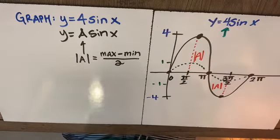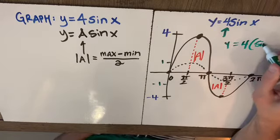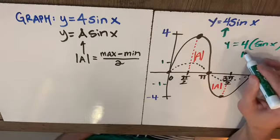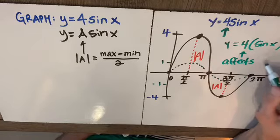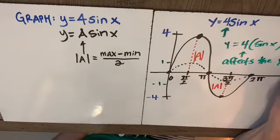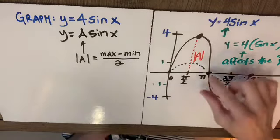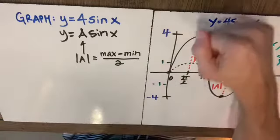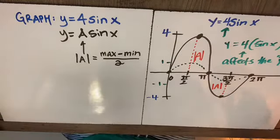When I say that you could look at it as y is equal to 4 times our parent function and anything outside affects the y values. So if you're outside you're away from the x, you're going to affect the y values. So where we had a y value of 1 we're going to do a vertical stretch and have a y value now of 4.